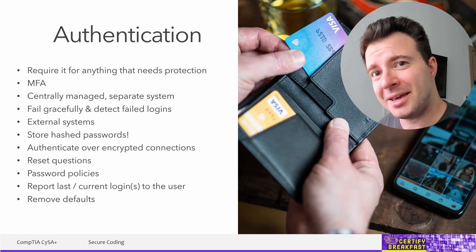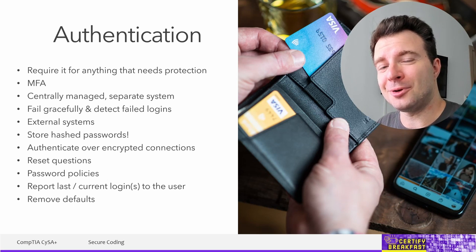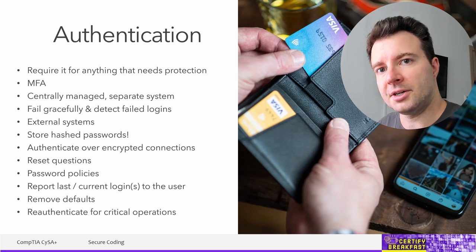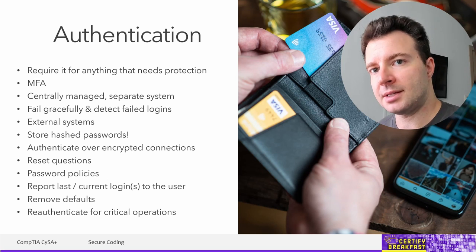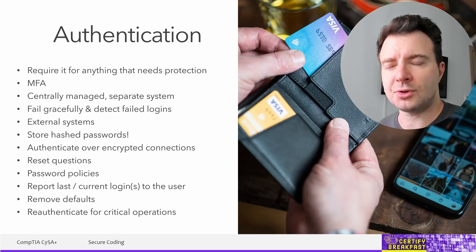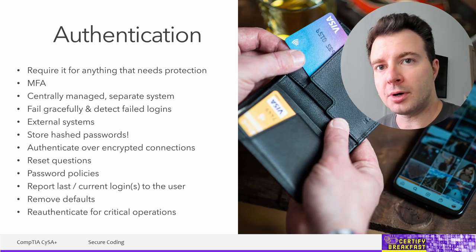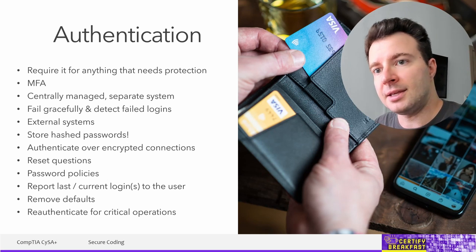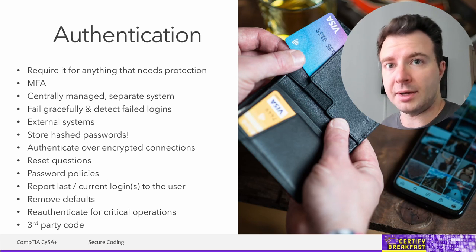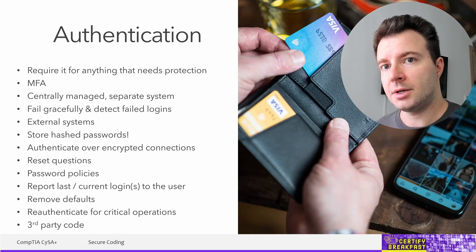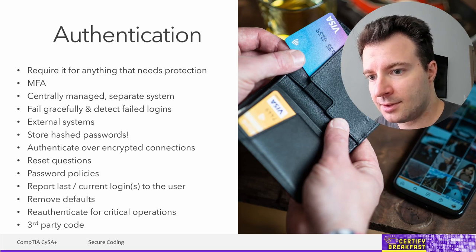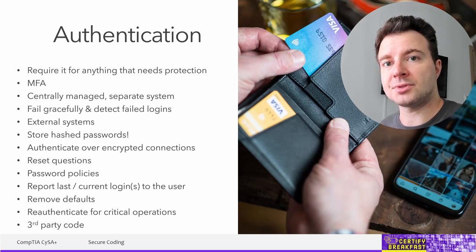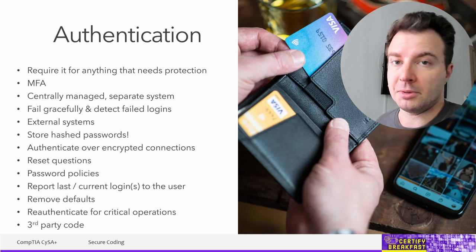Don't rely on default credentials — remove or replace default user accounts that come pre-configured from the manufacturer. Whenever a user tries to execute a privileged operation, re-authenticate that user every time — like websites that ask for your current password before allowing you to change it. This confirms the right user is performing the operation. Also, make sure any third-party software or libraries you use match the requirements of your authentication system, so they don't act as a backdoor circumventing your authentication.